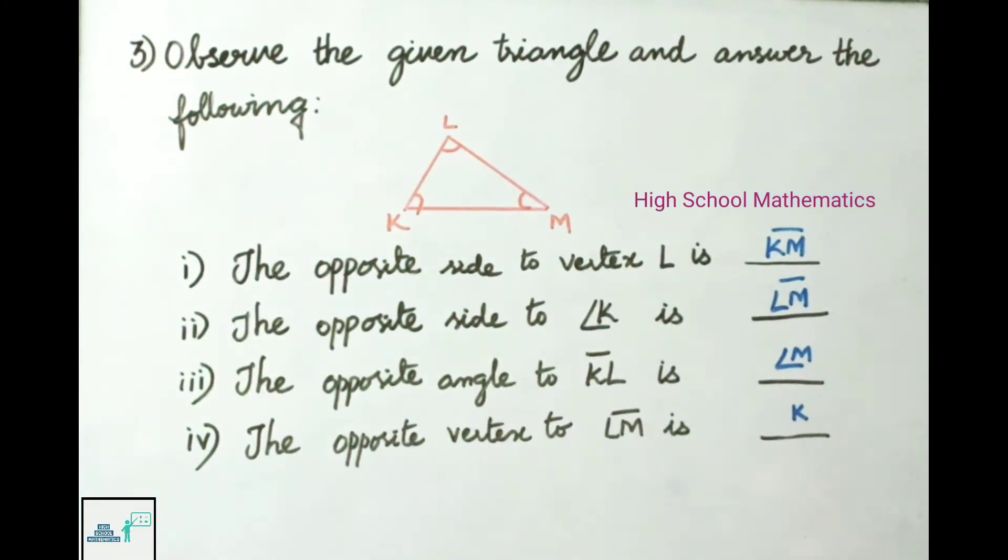Next one: The opposite vertex to LM—LM opposite vertex is K.